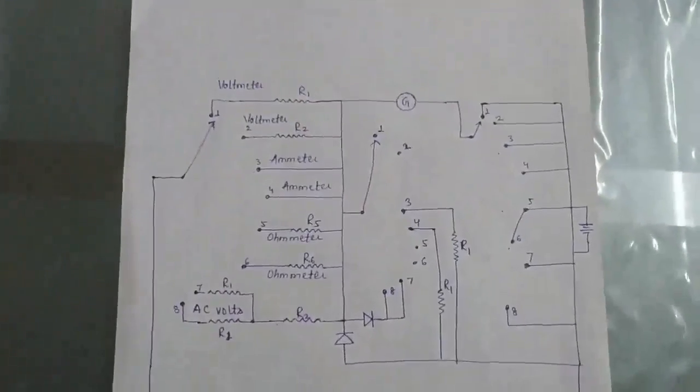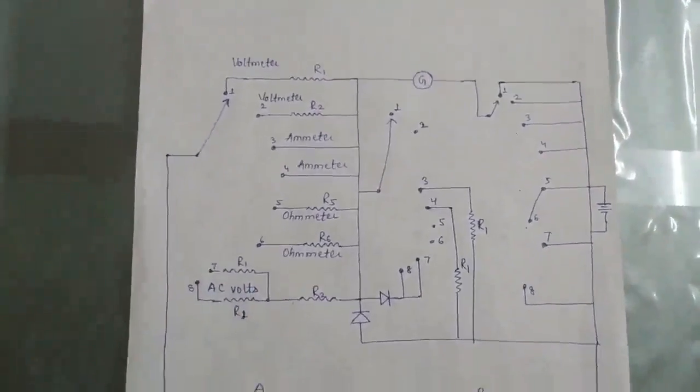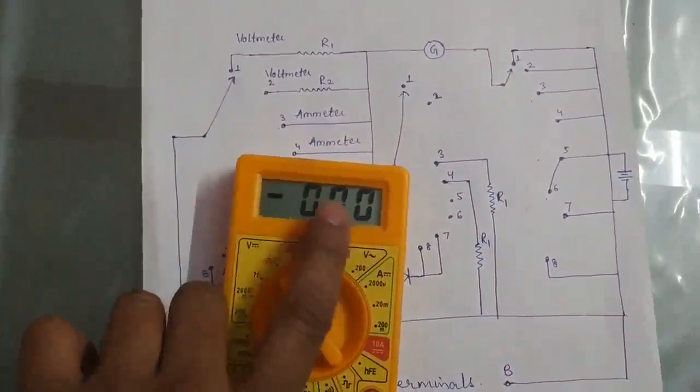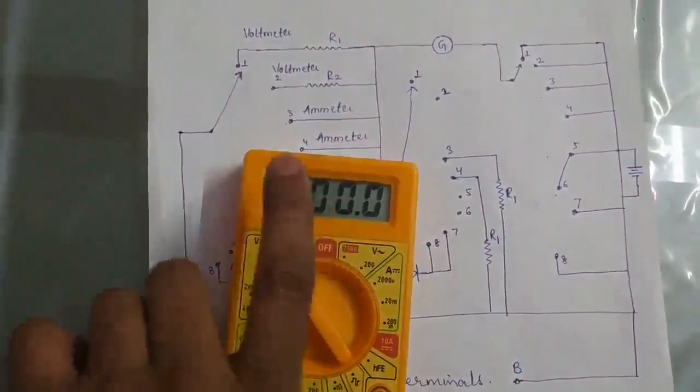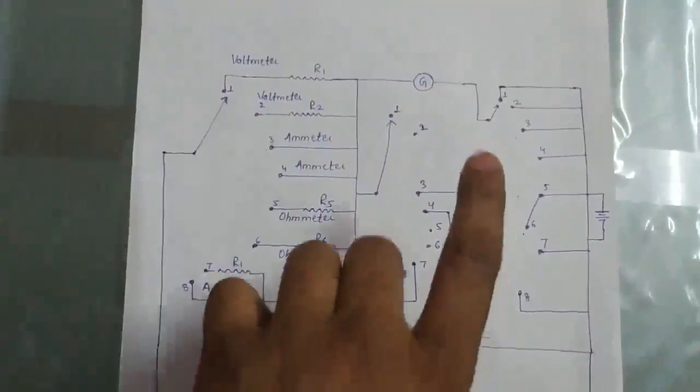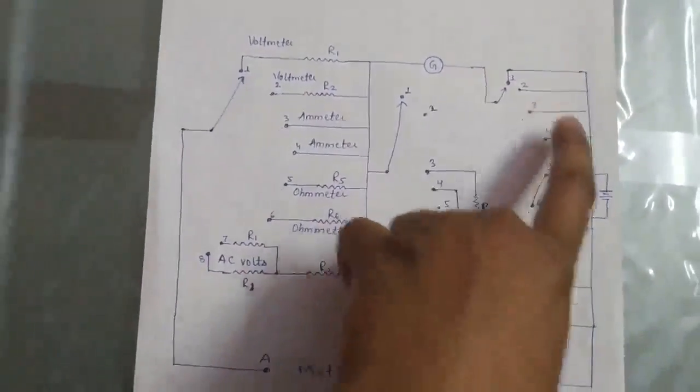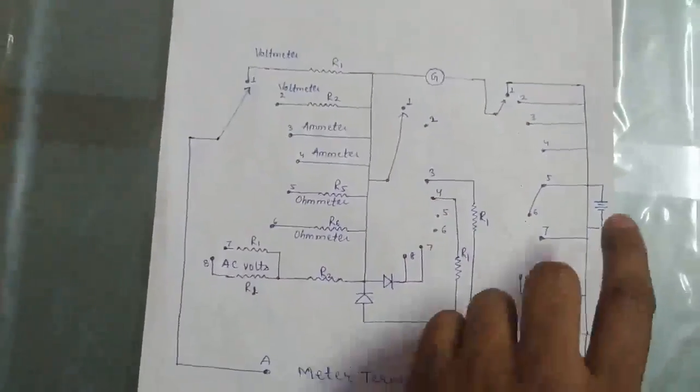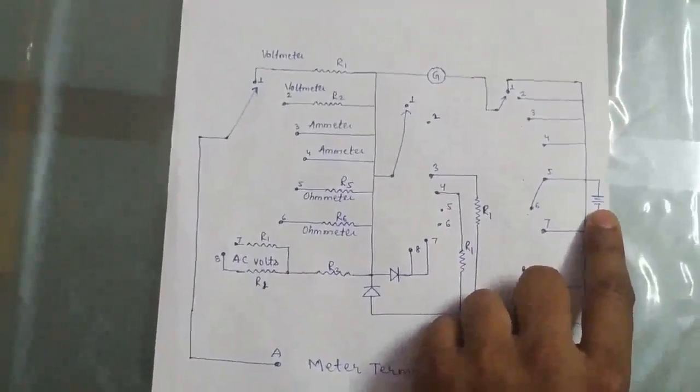This shows how much voltage is being detected, like this LED screen, the LCD screen, which indicates the reading. This part is connected to another internal switch, and this is an internal battery.